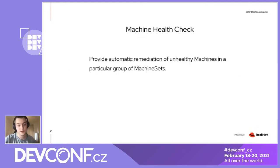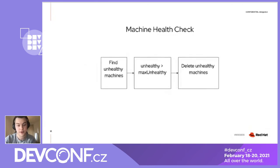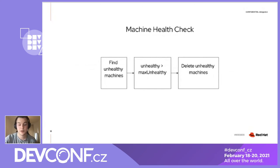Our next resource is machine health checks. Machine health checks provide automatic remediation of unhealthy machines in a group of machine sets. The logic is quite simple: the controller finds unhealthy machines. If the user defines a value for the max unhealthy field in the machine health check spec, remediation is not performed if the number of unhealthy machines exceeds the max unhealthy limit. This is a short-circuit mechanism, useful when a large number of nodes are down — for example, because of a networking issue. The last step is deleting unhealthy machines, and because machines are managed by machine sets, new ones are created to replace the unhealthy ones.